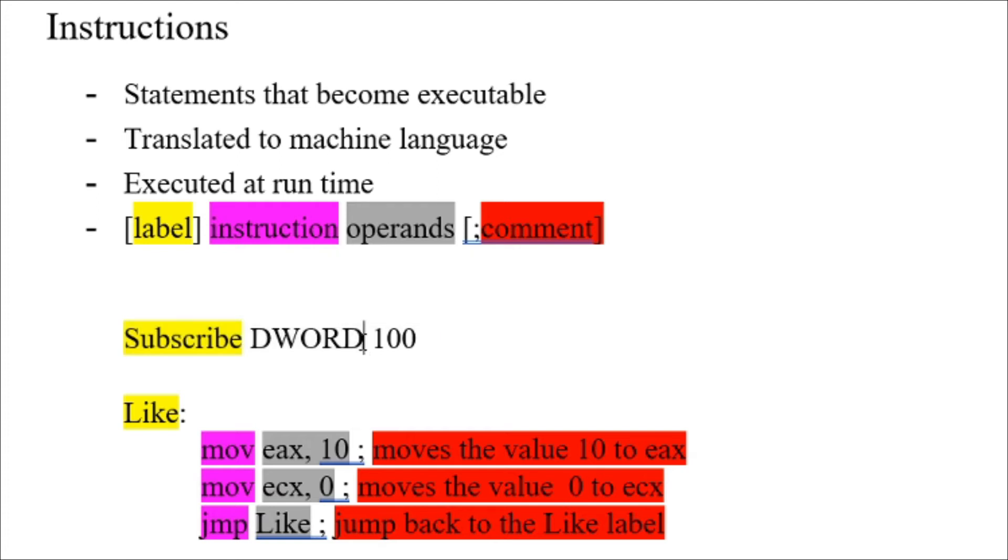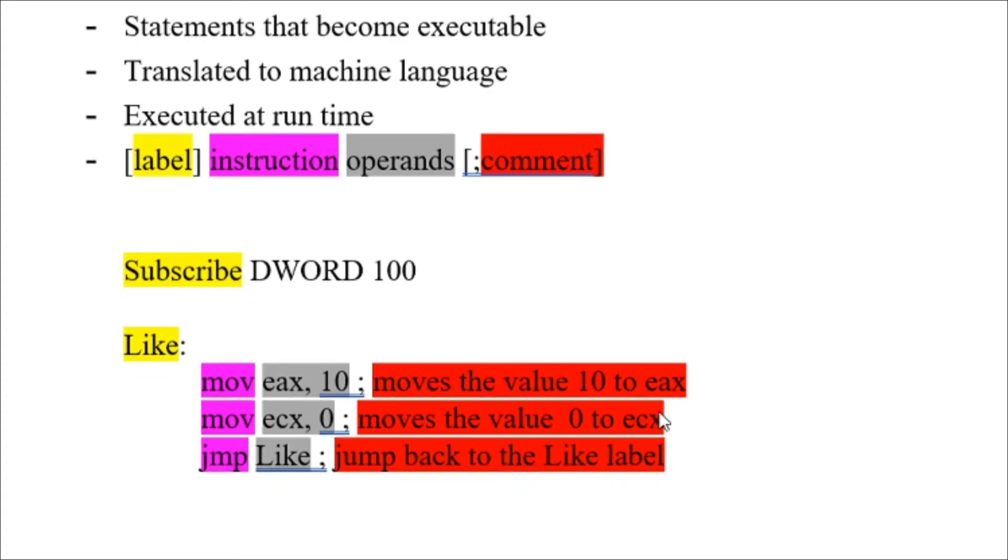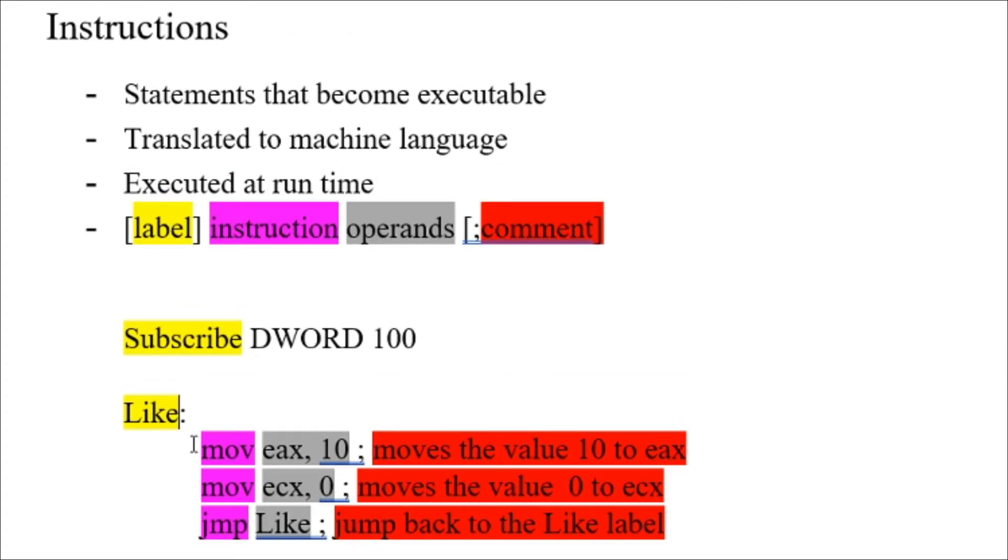Next is an example of a code label: Like. Like is a label, a marker that tells the assembler that these group of instructions are all inside the Like label. When you call the Like label, you perform these instructions.